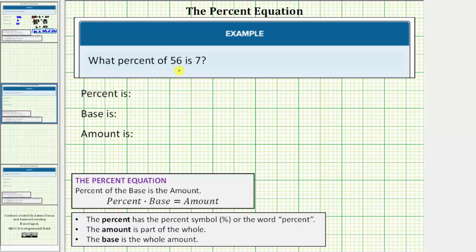We want to answer the question, what percent of 56 is 7? We'll be answering this question using the percent equation, which is percent times base equals amount. Where the percent has the percent symbol, or word percent, the amount is part of the whole, and the base is the whole amount.